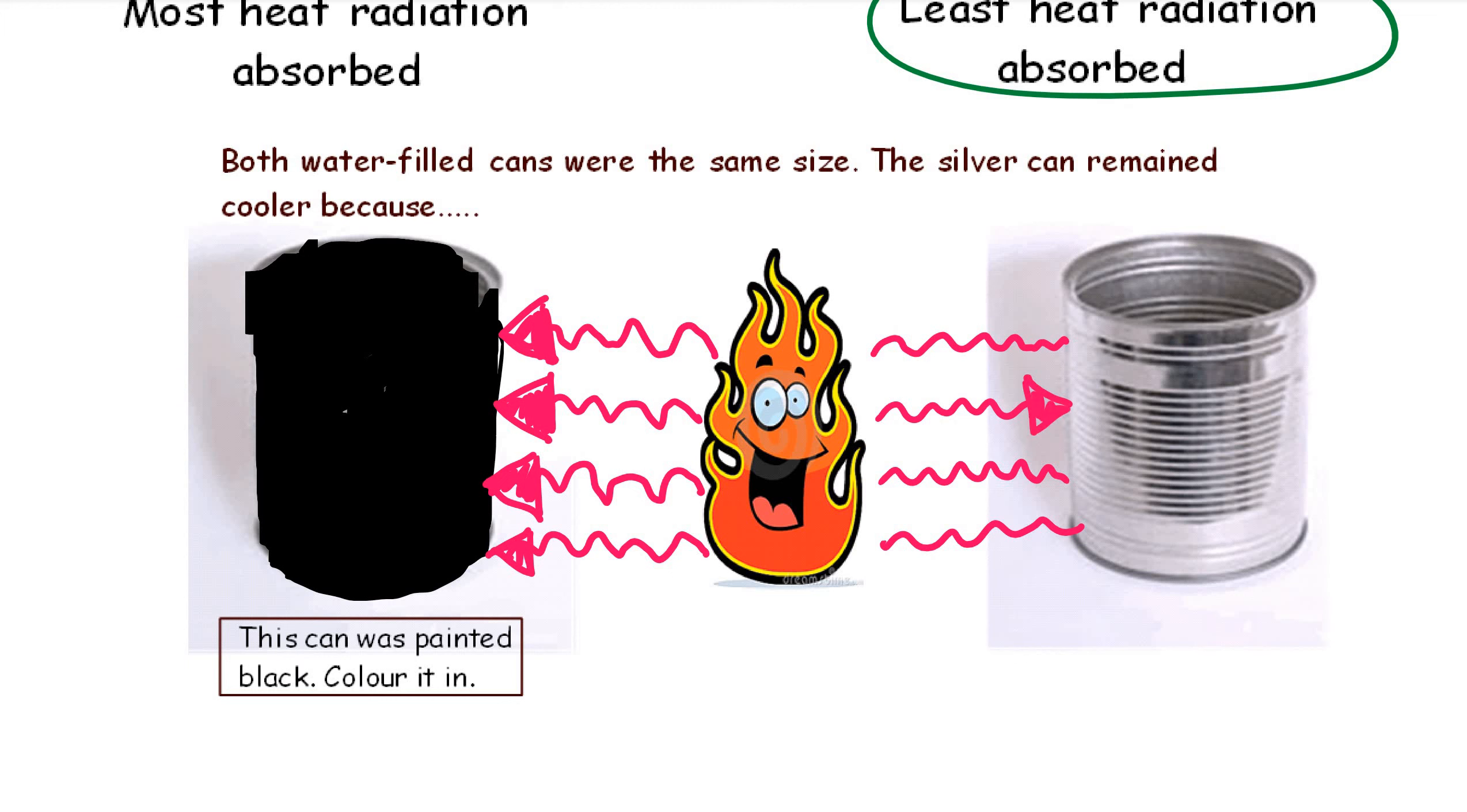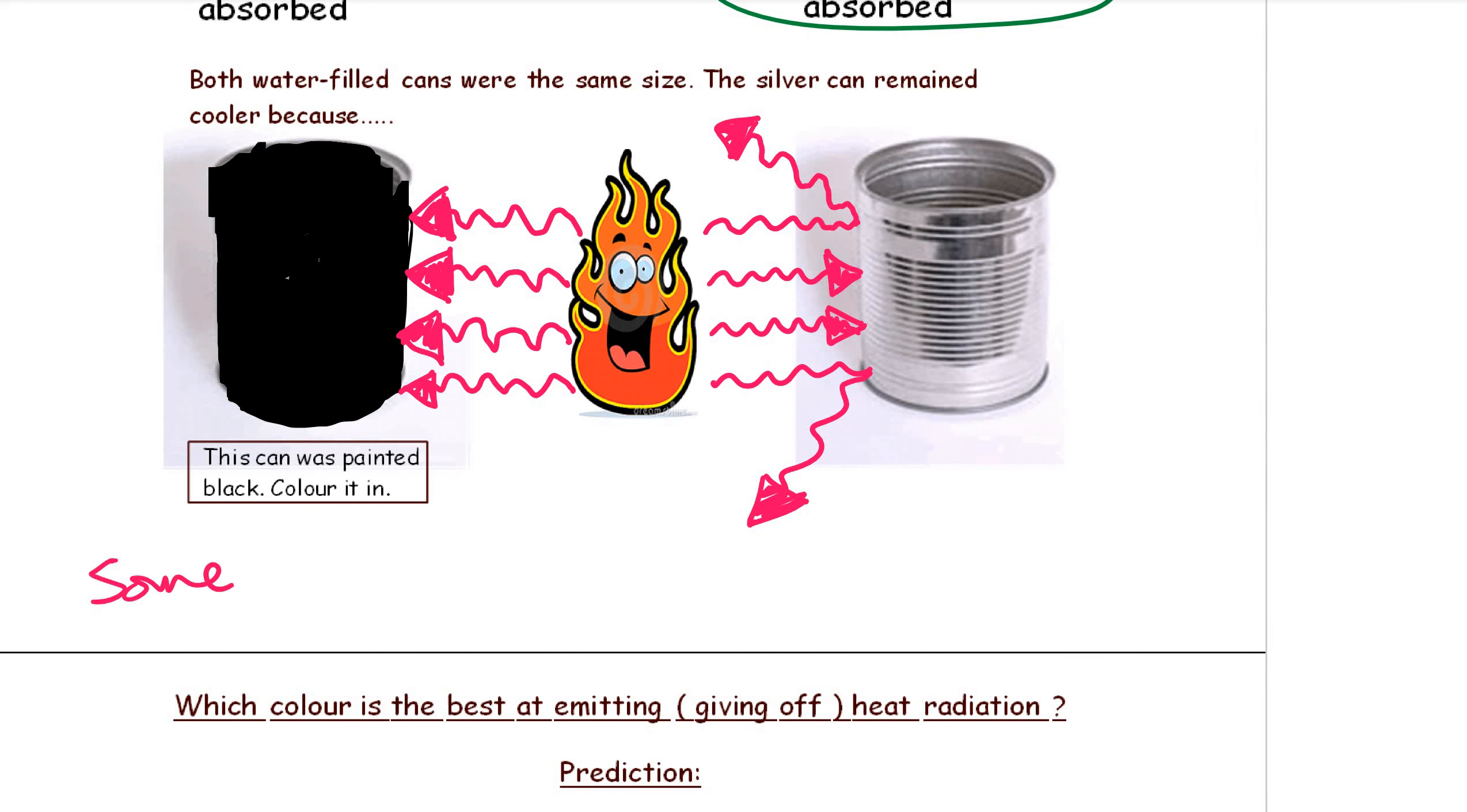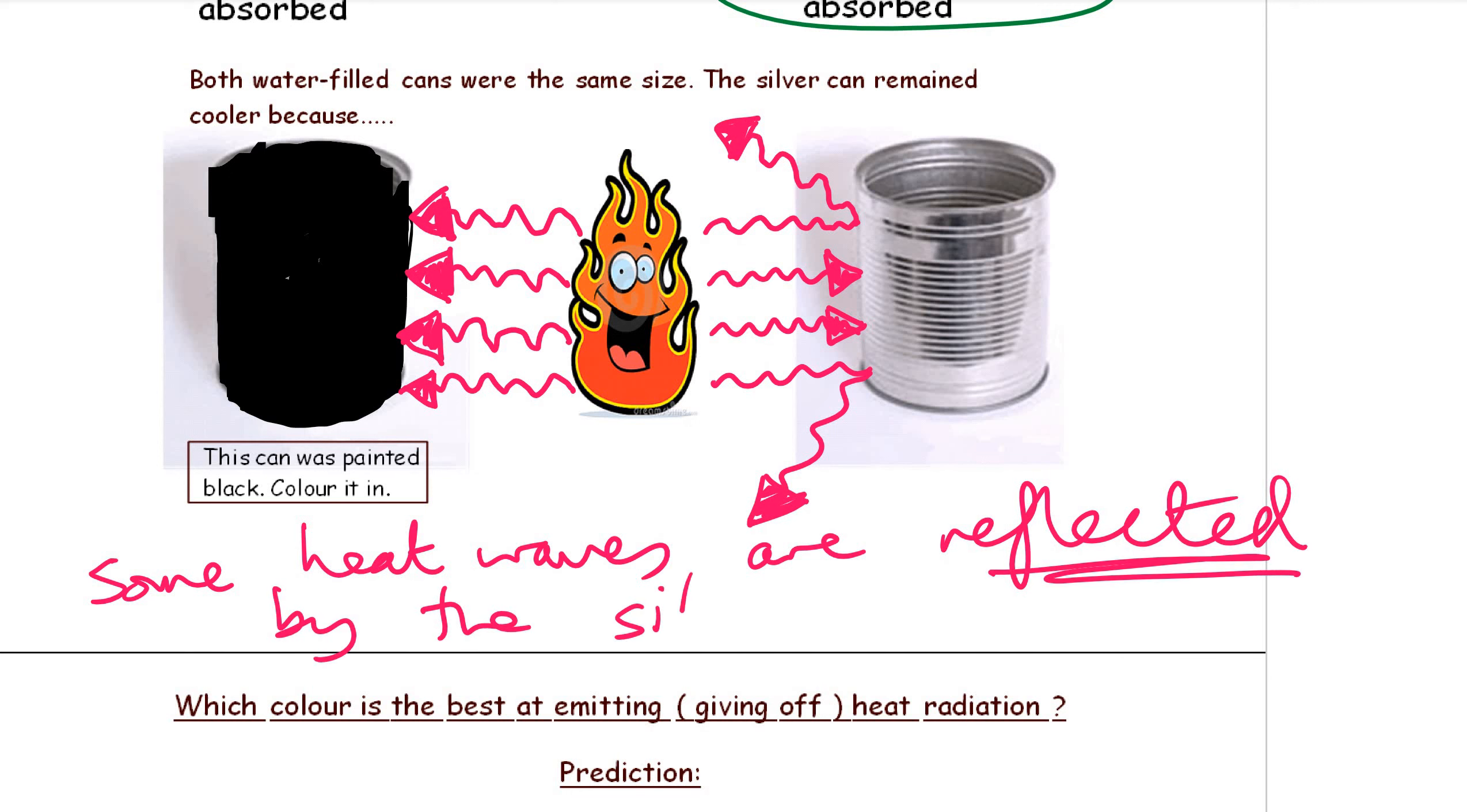But what do you think happens to some of the heat waves? Think about a mirror. Yup, they're going to be reflected. They're going to be reflected. So less heat can get through to the water inside the silver can. That's your answer. Some heat waves, infrared heat waves, are reflected by the silver can. End of lesson.